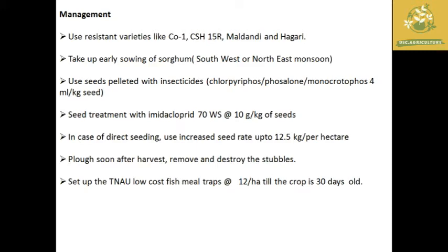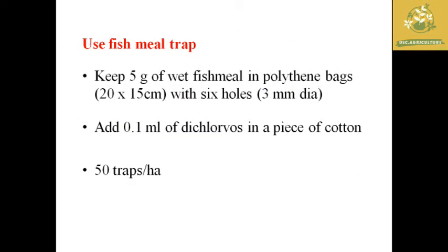Major management practices for shoot fly include use of resistant varieties, early sowing of sorghum during southwest or northeast monsoon, and seed treatment with imidacloprid at 10 grams per kilogram of seeds. We can also set up TNAU low-cost fish meal traps at 12 per hectare when the crop is around 30 days old.